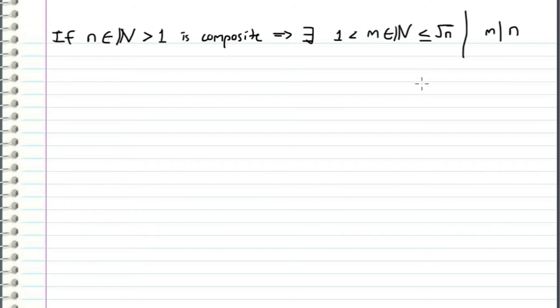Hey guys, so here's a problem that was sent in today, and I will be proving that if we have an integer n that is greater than 1 and is composite, then this implies that there exists an integer m that is greater than 1 and less than or equal to the square root of n such that m divides n.